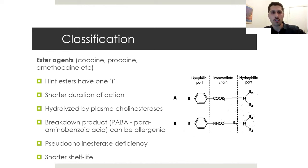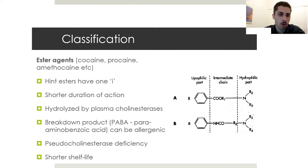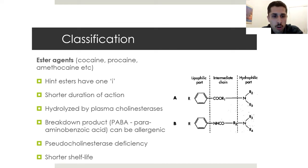Ester agents include cocaine, procaine, and methicaine. A good way to remember them is they have one 'i' in their name. They have a shorter duration of action because they're hydrolyzed in the plasma by plasma cholinesterase. They're broken down into para-aminobenzoic acid (PABA), which can be allergenic, giving them a higher rate of allergic reactions than amides. Patients with pseudocholinesterase deficiency have impaired metabolism of ester agents, increasing the risk of toxicity. They also have a shorter half-life.